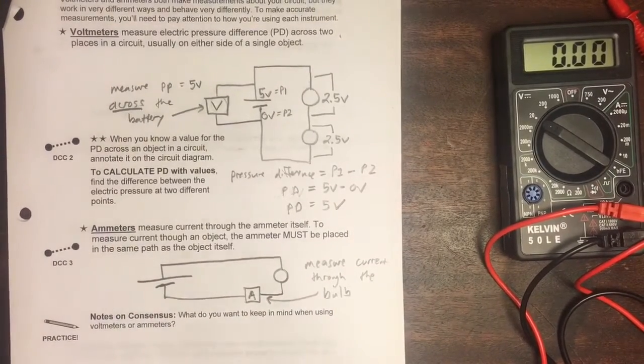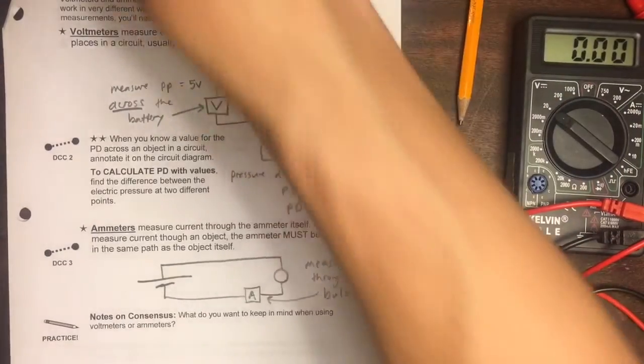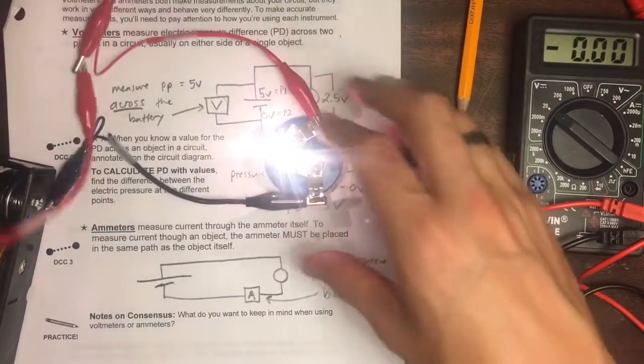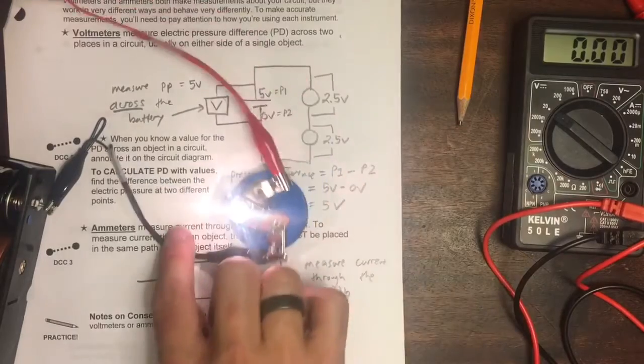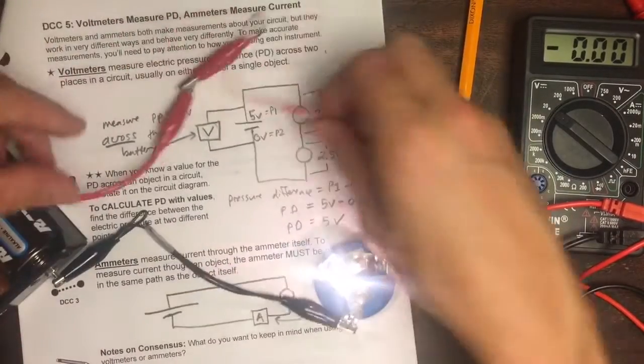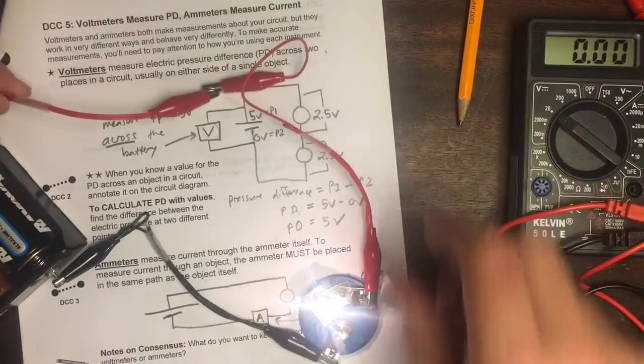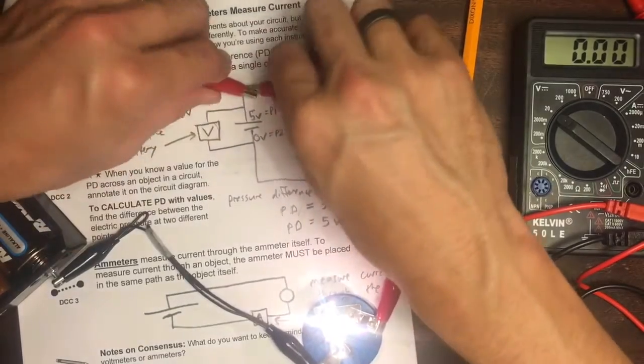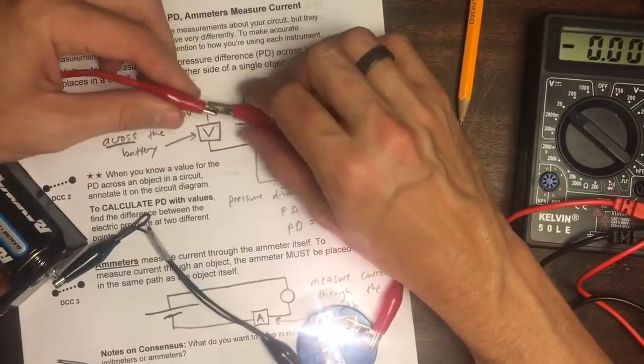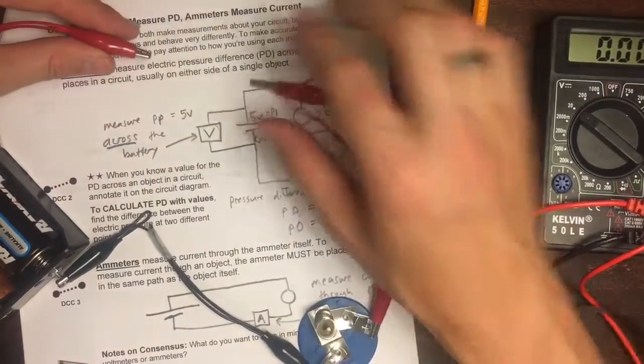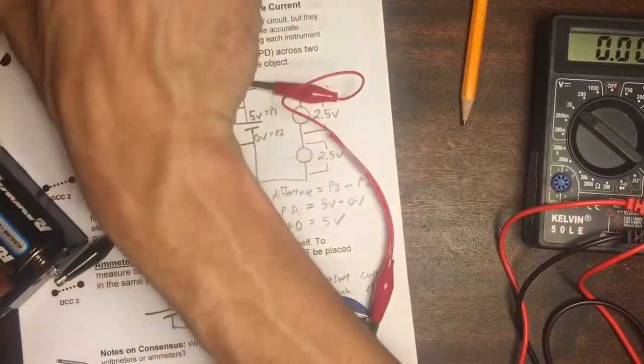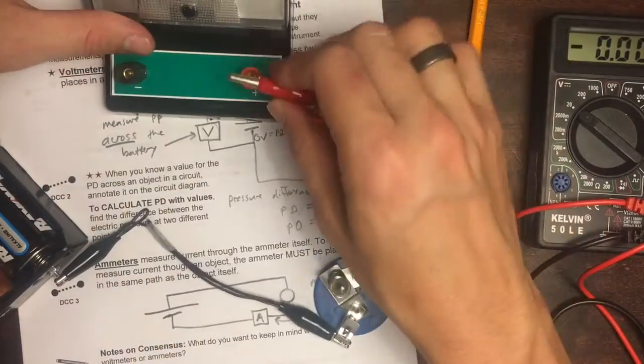This is what we're doing here. Let me show you how this works for a real circuit. We've got our battery hooked up to our bulb. We've got these wires. And we need to break the connection between these two wires in order to insert the ammeter and actually make a measurement.